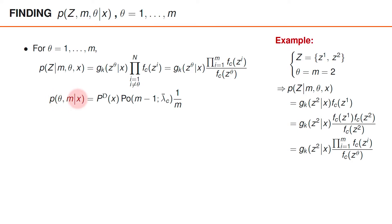The prior probability of theta and m given x now contains three factors. First, that the object is detected, which happens with probability PD. Second, that we have precisely m minus 1 clutter detections, since we have m measurements in total, among which 1 is an object detection. This happens with probability Poisson of m minus 1, where the Poisson distribution has parameter lambda bar c. Finally, theta also specifies which measurement is the object measurement. Since the measurements are randomly ordered, every possible value between 1 and m is equally likely before observing z, so they all have probability 1 over m, given the value of m and that the object is detected. A detailed derivation of this result is provided on the homepage and in the book.